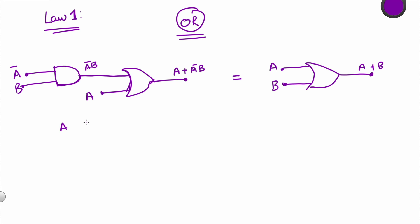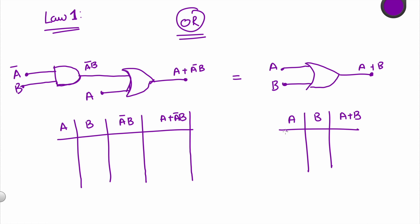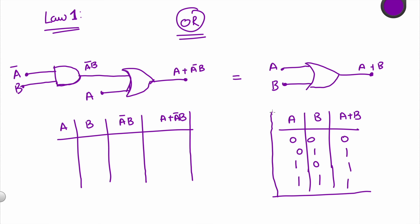Let's check how it turns out with a quick truth table. We'll take A and B values, we also need A complement B, and the final output is A plus A complement B. For the simple OR side: A plus B gives zero, one, one, one.